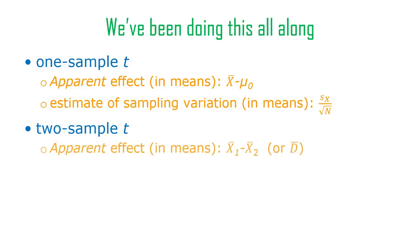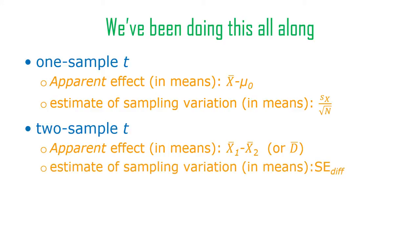For a two-sample t, the apparent effect is either mean one minus mean two — the difference between sample means — or the mean of paired sample differences, d-bar. They're essentially the same. The difference between sample means is the apparent effect, what it looks like the difference is in our sample. To conclude that that's a real effect, it better be bigger than our estimate of sampling variation. Our estimate of sampling variation among the mean differences is the standard error of the difference. We make sure it's a lot bigger — like 1.96 or 2.04 bigger with our t.